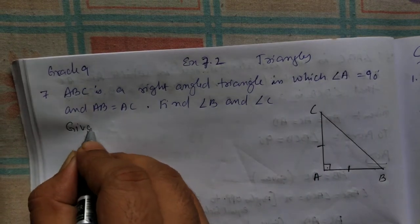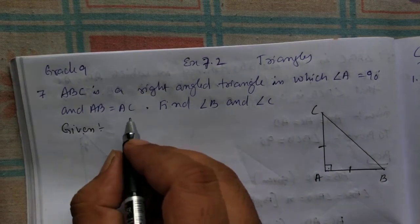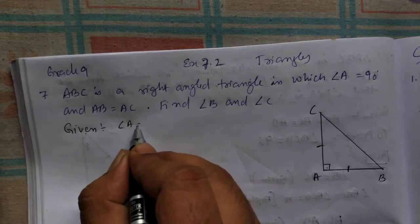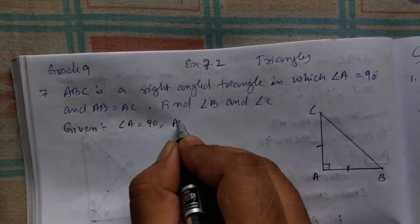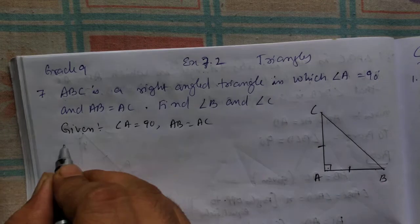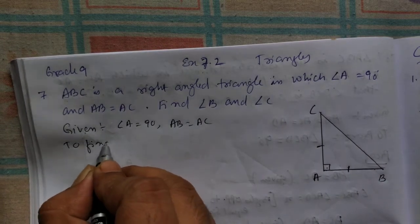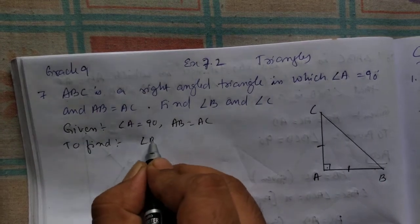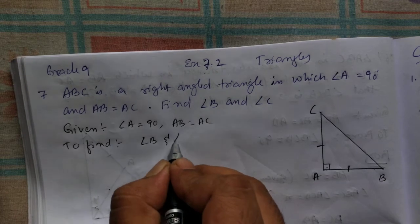Given you can write: What is given? Angle A is equal to 90. AB is equal to AC. And you're going to find angle B and angle C.